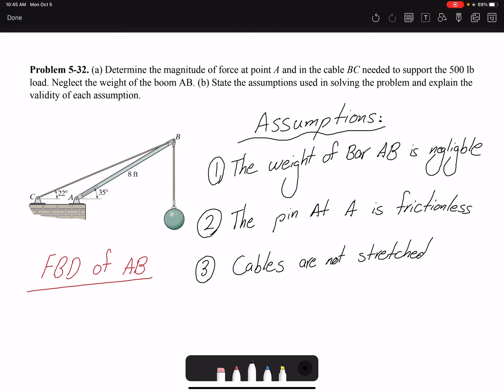Neglect the weight of the boom AB. State the assumptions used in solving the problem and explain validity of each assumption. In engineering we always make assumptions, and anytime you make any assumptions you are introducing error into your solution. Whether that error is negligible or not depends on the problem, so you have to use your engineering judgment.